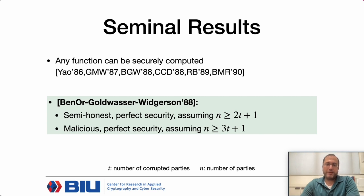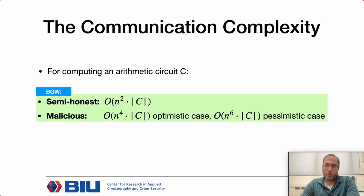Perfect security means that the adversary can be computationally unbounded, and protocols in these settings are usually also adaptively secure and secure under concurrent composition once they satisfy some natural requirements.